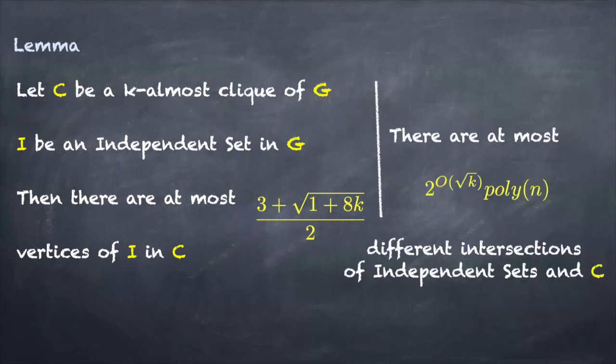And actually we need a bit more. We also need an efficient way of enumerating these sets. And the second part of the lemma is that there are at most 2^(√k) times poly(n) different intersections of independent sets and the clique.